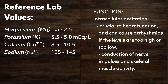Potassium is also a major intracellular cation in the body. Therefore, since the serum electrolyte value is a measurement of the amount of potassium in the ECF, very small variances in the potassium level make a big difference in the patient. The normal level is 3.5 to 5.0 milliequivalents per liter. The basic function of potassium is intracellular excitation, which means it is crucial to heart function and can cause arrhythmias if levels are too high or too low. Potassium also plays a role in conduction of nerve impulses and skeletal muscle activity.